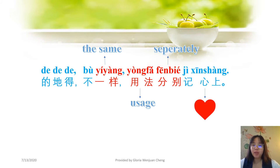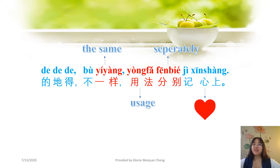得地的不一样, 用法分别记心上. The three 得 are not the same — 不 is a negative word which means 'not', 一样 means 'the same', so 不一样 means 'different'. 用法 means 'the usage', 分别 means 'separately', 记 means 'to remember', 心上 means 'in the heart'.